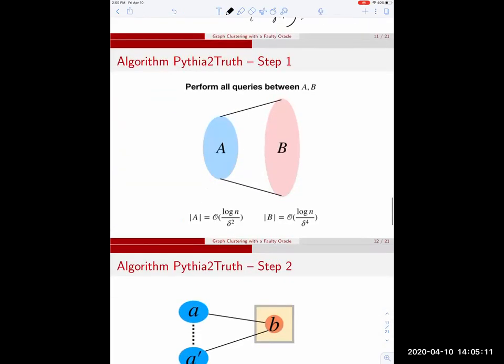Our algorithm is very simple and easy to implement, easy to describe and easy to implement. We choose two sets, a and b, arbitrarily. A has log n over delta square nodes and b has log n over delta to the fourth nodes. We perform all possible queries between them.